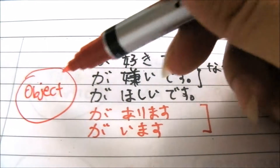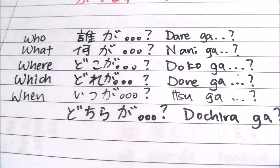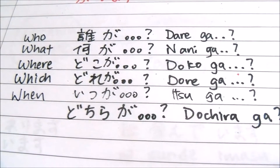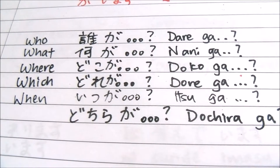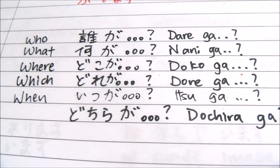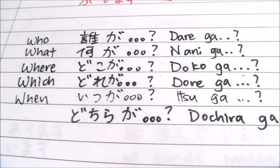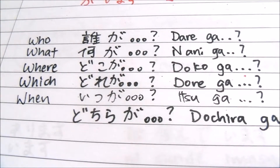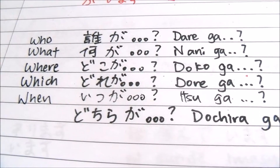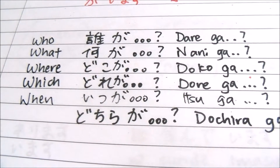So が (ga) kind of focuses and emphasizes on the object before it. In the same way, question words like who, what, where, when, and which are all focusing on these questions. When you have questions that don't end with a — so it's not だれですが, なんですが, どこですが, どれですが, いつですが, どちですが — as long as it doesn't end with a, you start with が instead.